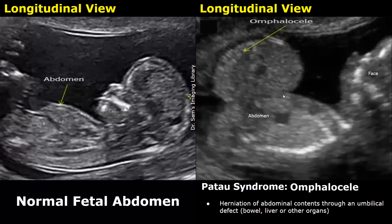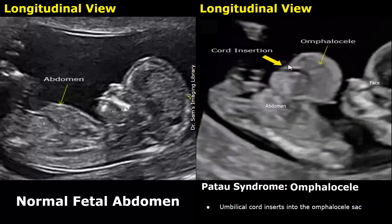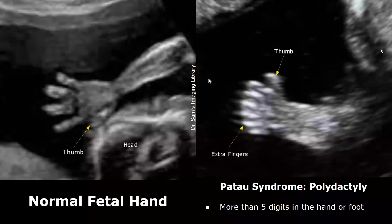Abdominal abnormalities may include omphalocele. Omphalocele is the herniation of abdominal contents through an umbilical defect. In this image, this is the omphalocele. The herniated contents are usually bowel or liver, but may include other organs as well such as the stomach. The omphalocele is usually present at the center of the abdomen. This protruding structure is the omphalocele sac, and the umbilical cord inserts into this omphalocele sac.